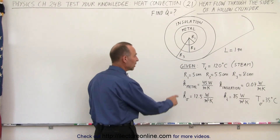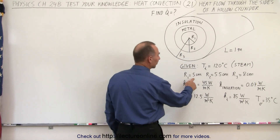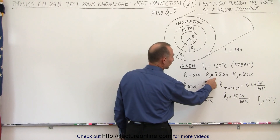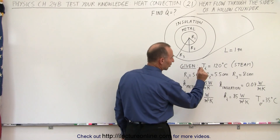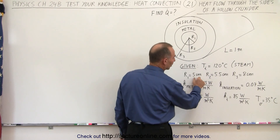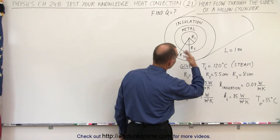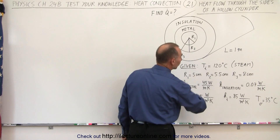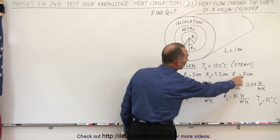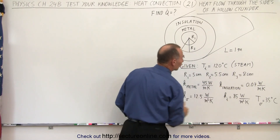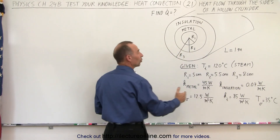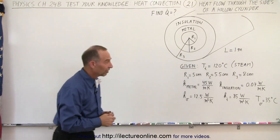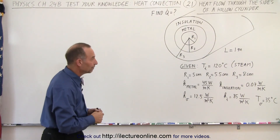Notice the radii: the inside radius is 5 centimeters, the outside is 5.5, which means the thickness of the metal is 0.5 centimeters, and then the insulation goes from 5.5 to 8 centimeters, so it's about 2.5 centimeters wide.